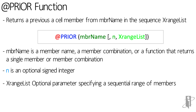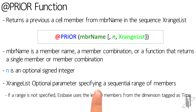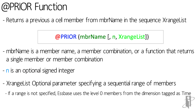X range list is an optional parameter that specifies a sequential range of members. If a range is not specified, S-Based will use the level 0 members from the dimension tagged as time. The X range list can be a valid member name, a comma-delimited list of member names, cross-dimensional members, or a return value from a member set function or range function including X range. The X range function allows combining members from multiple dimensions into one list, which helps with applications that have separate year and time dimensions.